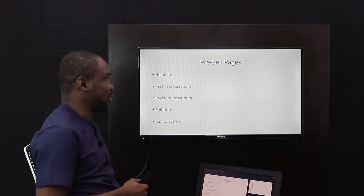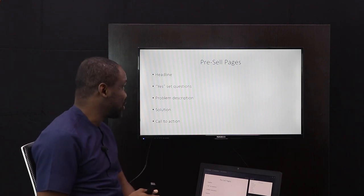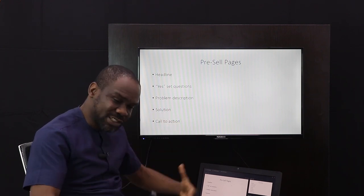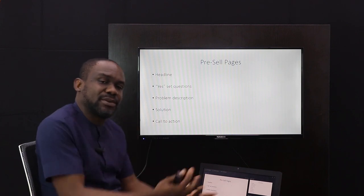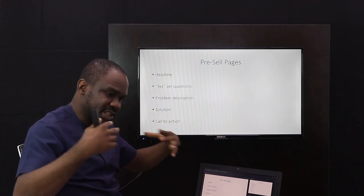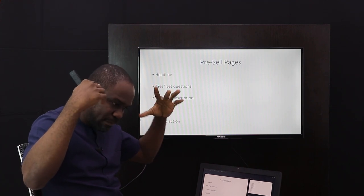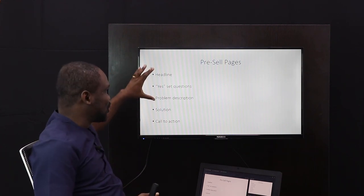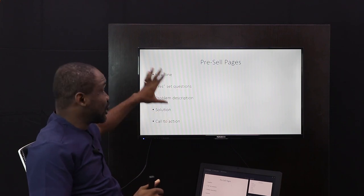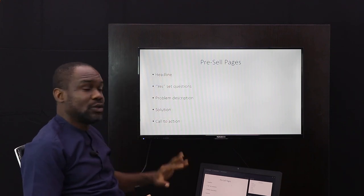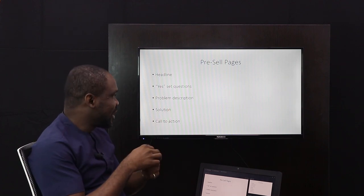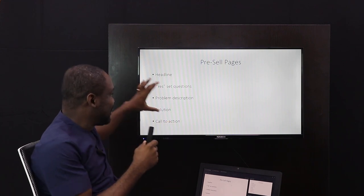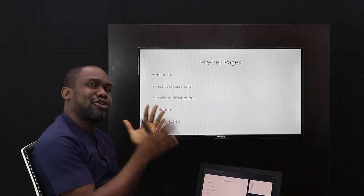Next is the pre-sale page. From the name you can probably guess what it is — it's content that pre-sells a product to the person without directly telling them to buy it. It gets them interested in buying the product. It's similar to an advert but a bit more expanded. You can actually use the pre-sale page content as an advert as well — it's the same thing, just with more content added to it. So we still start with a headline, and then we add what's called a yes-set question.